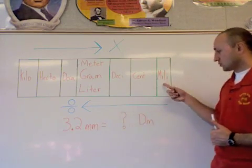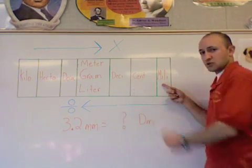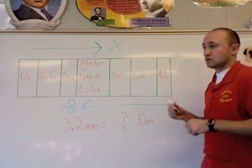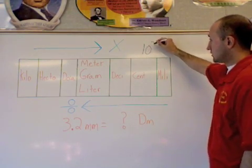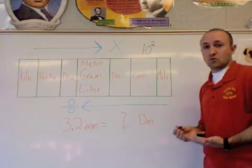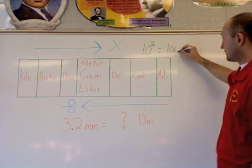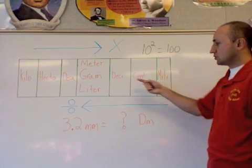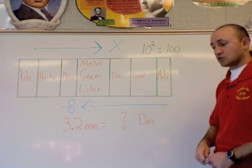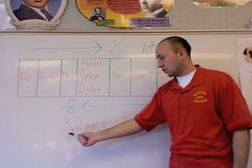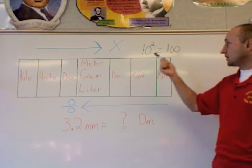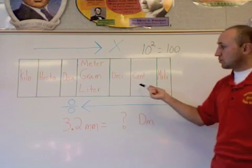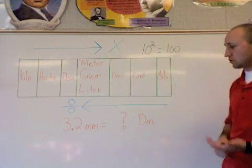We're going from millimeters, which is here, to decimeters, which is here. So let's count the number of spaces first. We're moving one, two places. So now what I have is 10 to the power of 2, or 10 squared, which equals 100. And since I'm going from smaller to larger, it's going to be a division problem. So what I'm actually going to do is take 3.2 and divide that by 100.